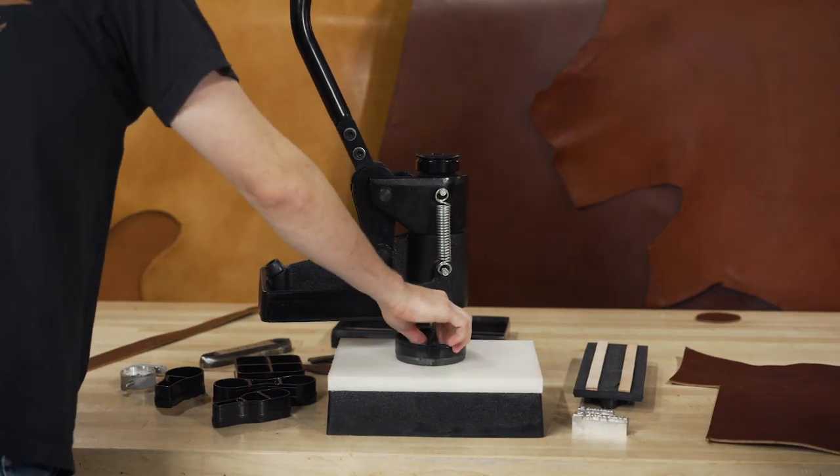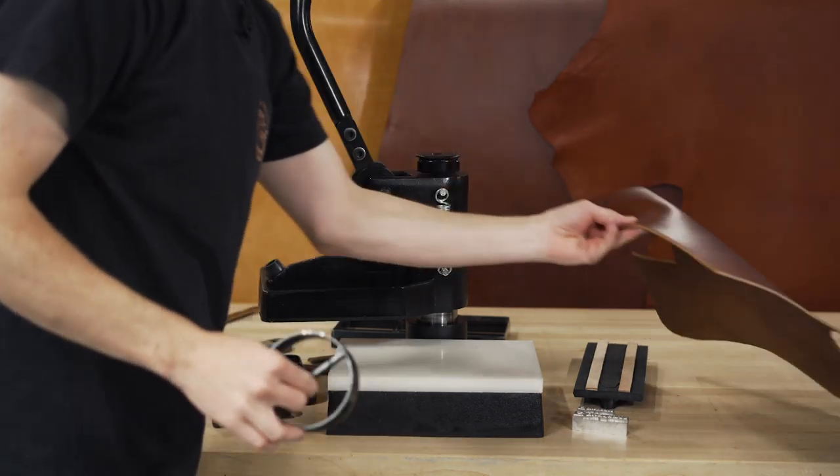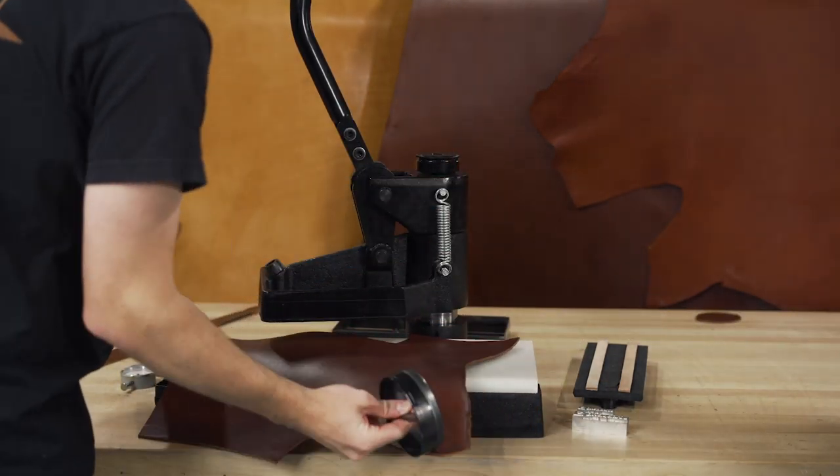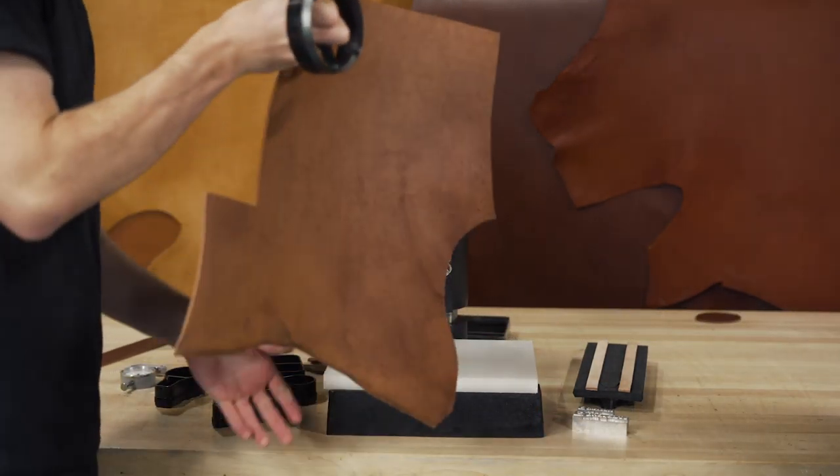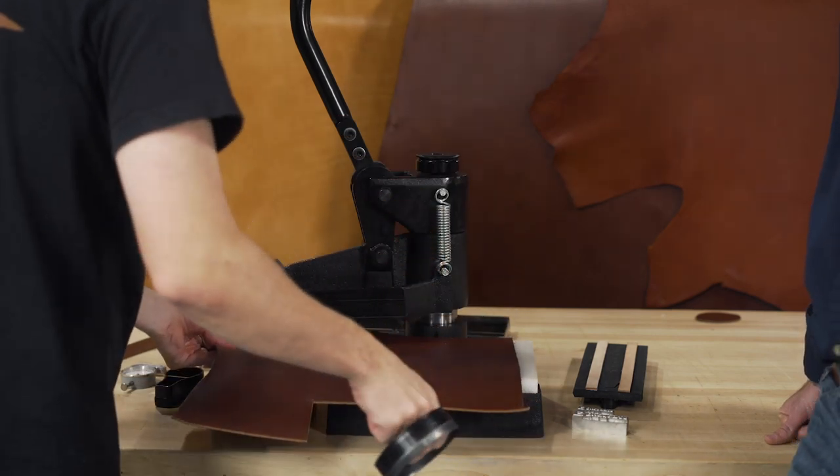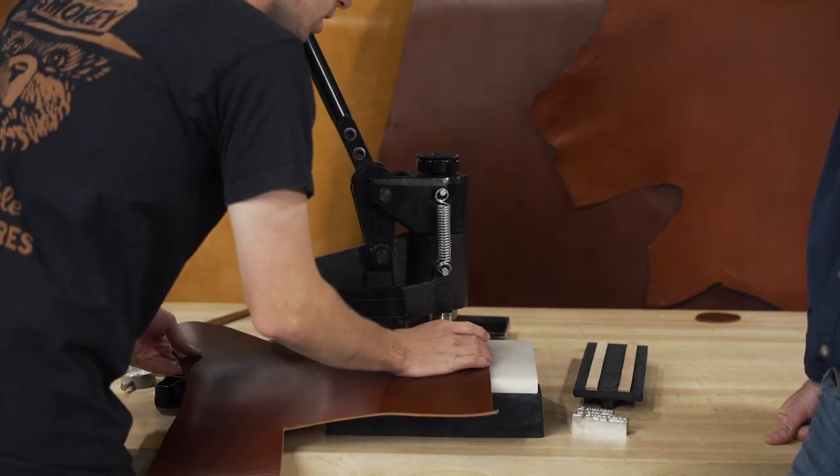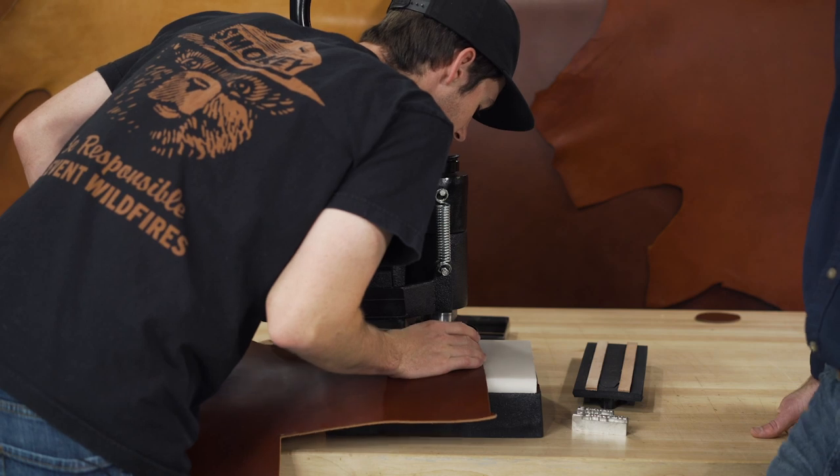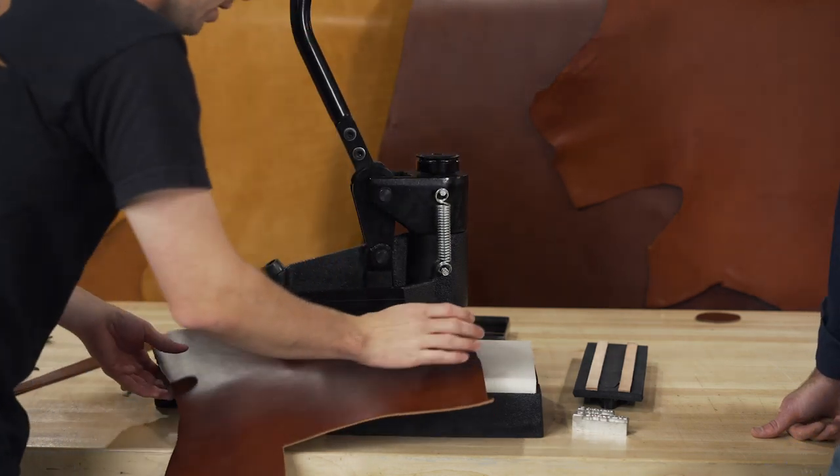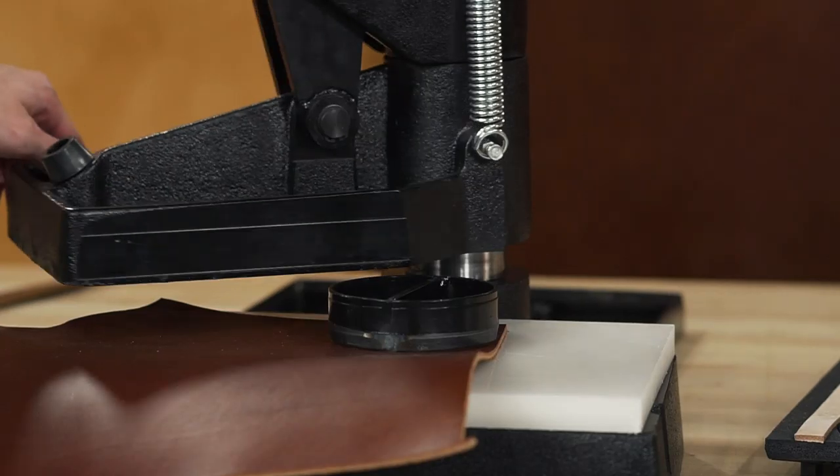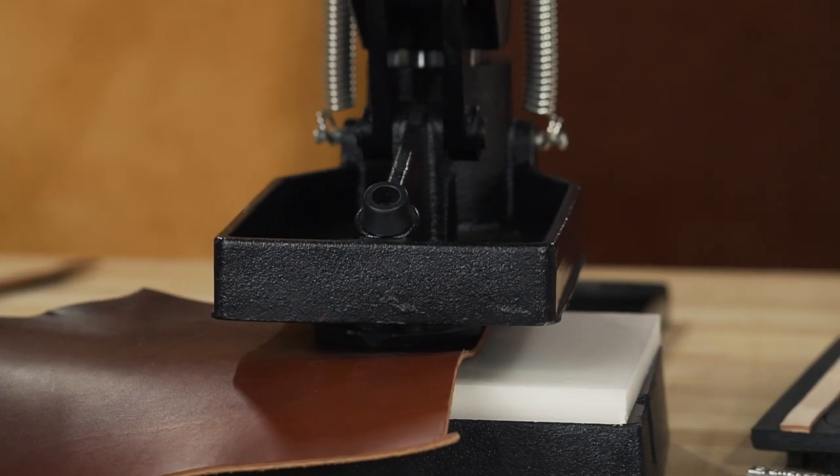So we're going to get our material. I'm going to place that on the cutting board. This is a thick 8 to 10 ounce piece of bridle leather. I'm going to line up the die right in the back corner so that we get a good cutting yield. And now we're going to swing it over and just press down.